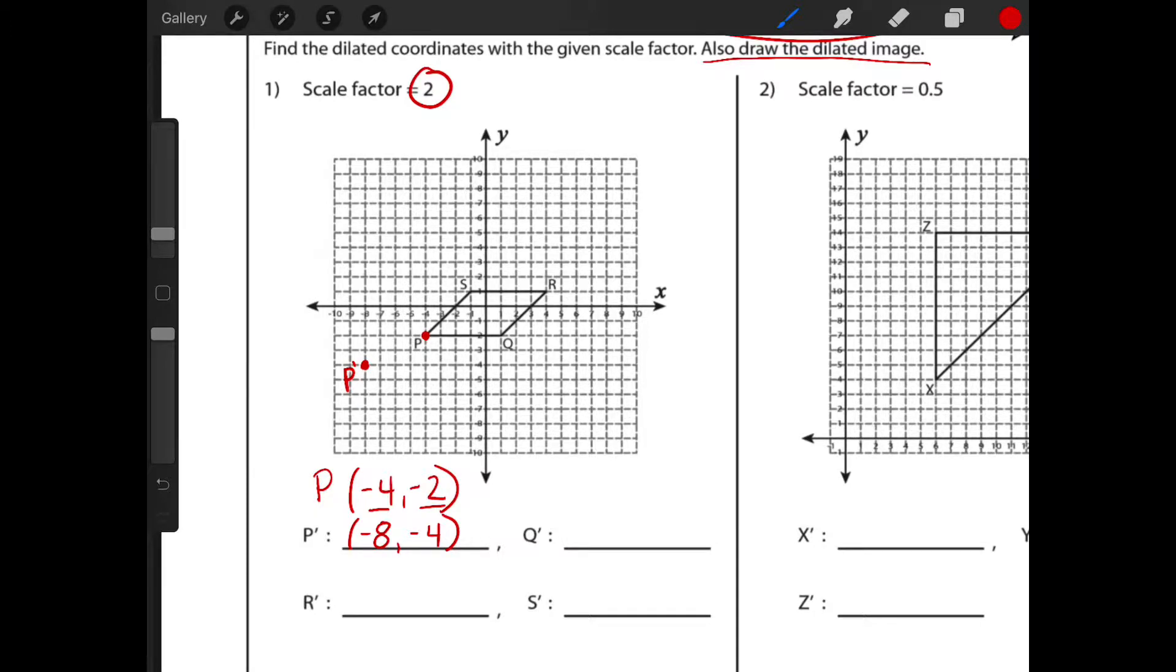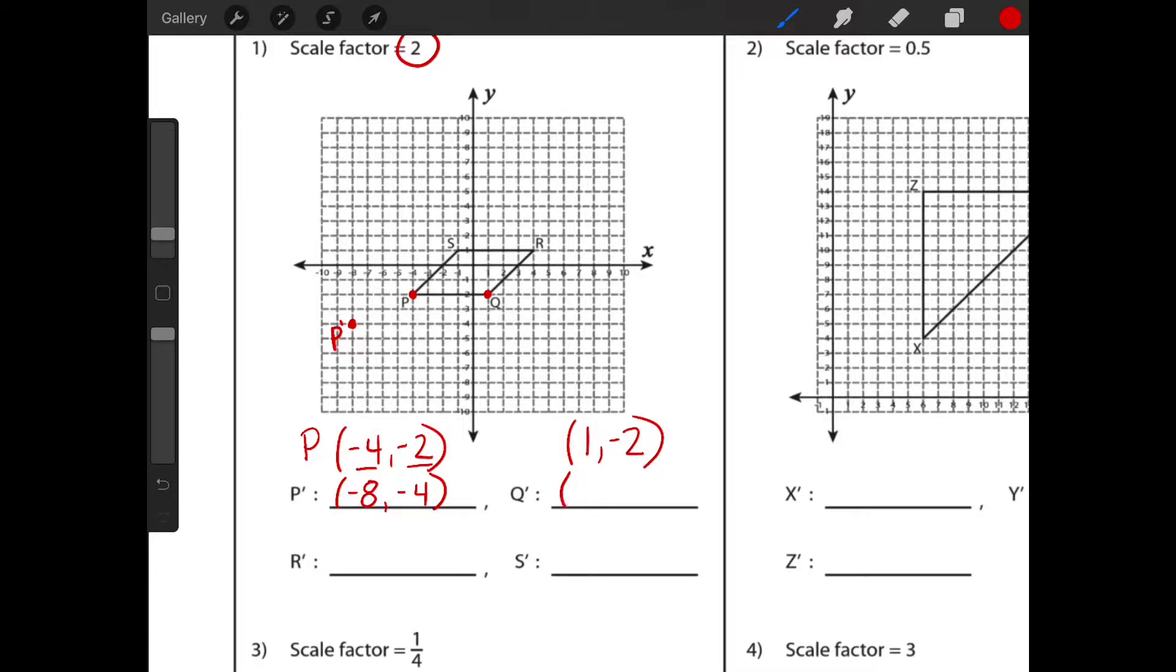This is just the way that I use. There's more than one strategy. You could have done all four coordinates if you wanted to, but this is just one way that I do it so that we can make sure that we're keeping track of all the ones we do. The next one is my Q prime. So I'm going to do Q, which in this case is positive one, negative two.